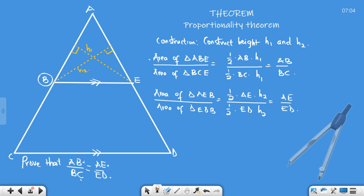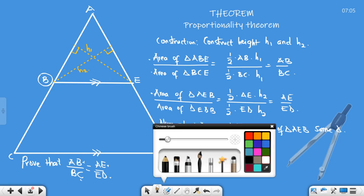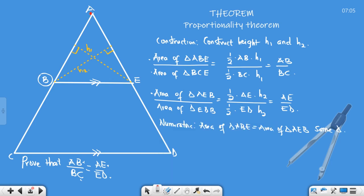You are halfway done. Your next job would be to prove that this triangle and this, the numerators have the same area and the denominators have the same area. Let's look at the numerators: area of triangle ABE is the same as area of triangle AEB. We're talking about the same triangle.